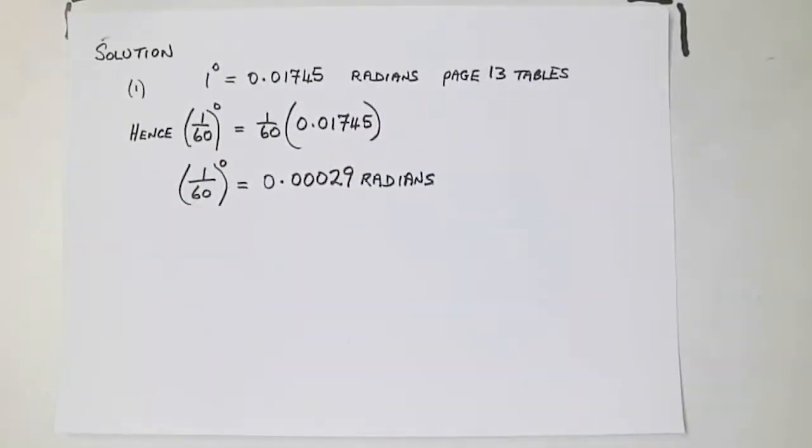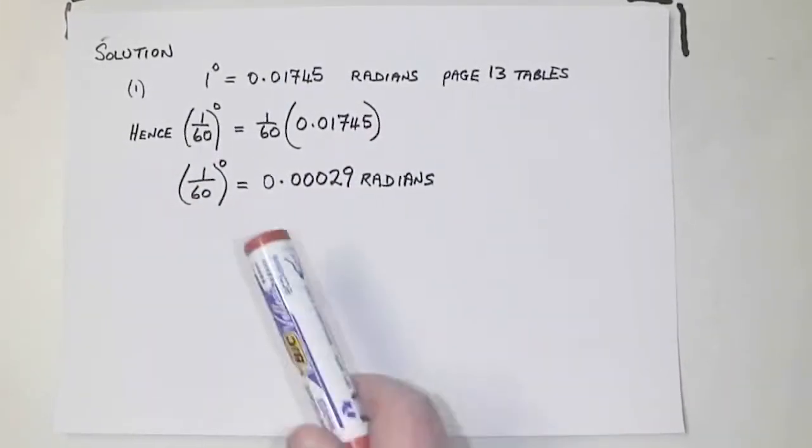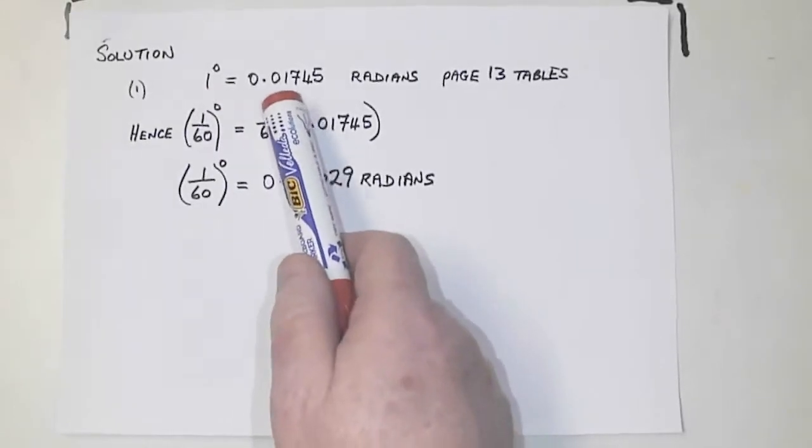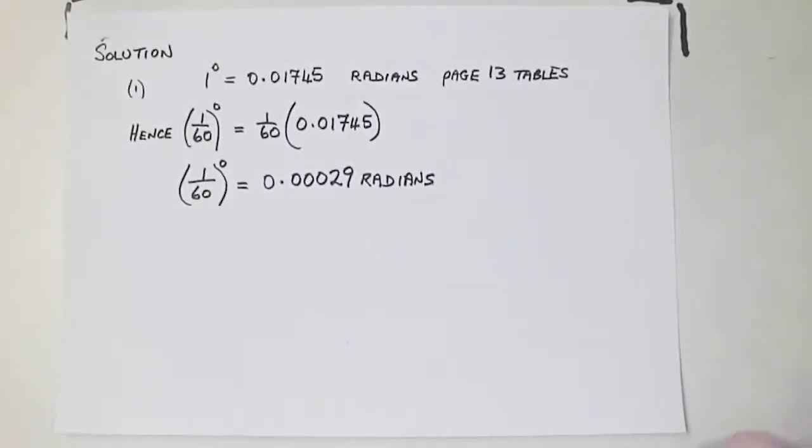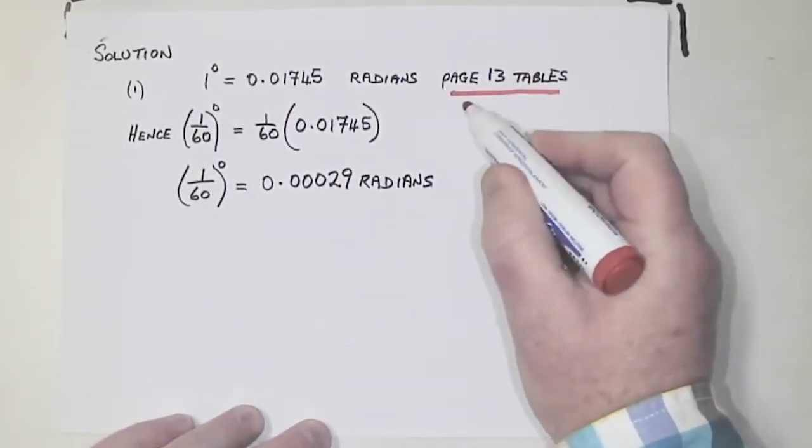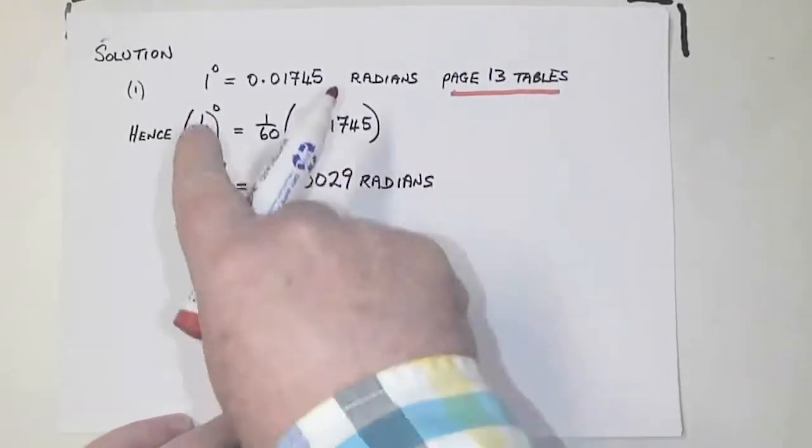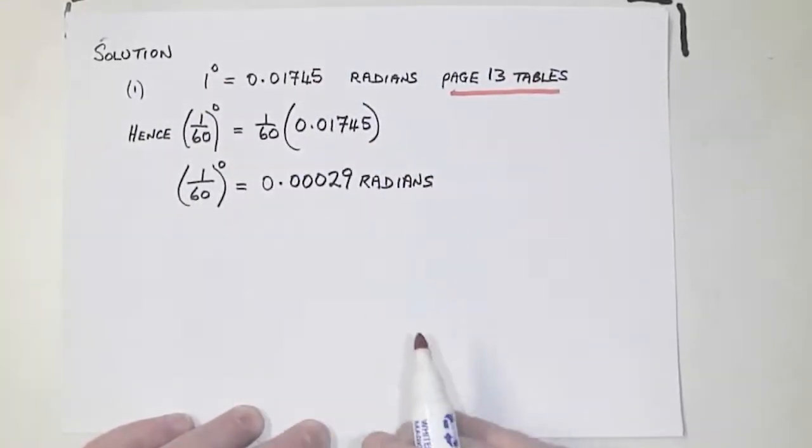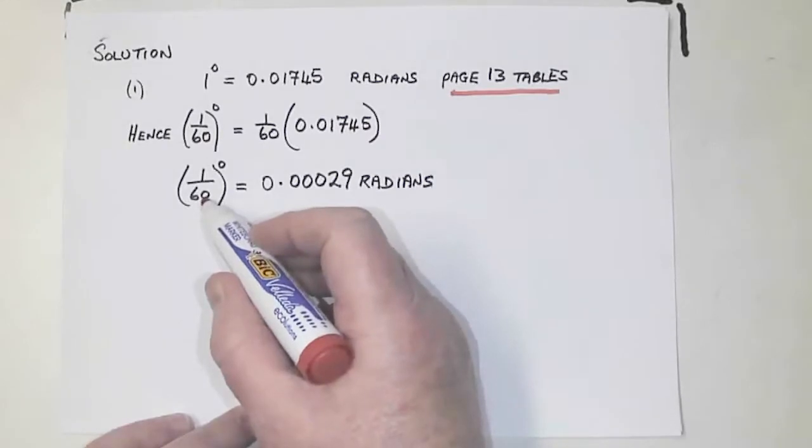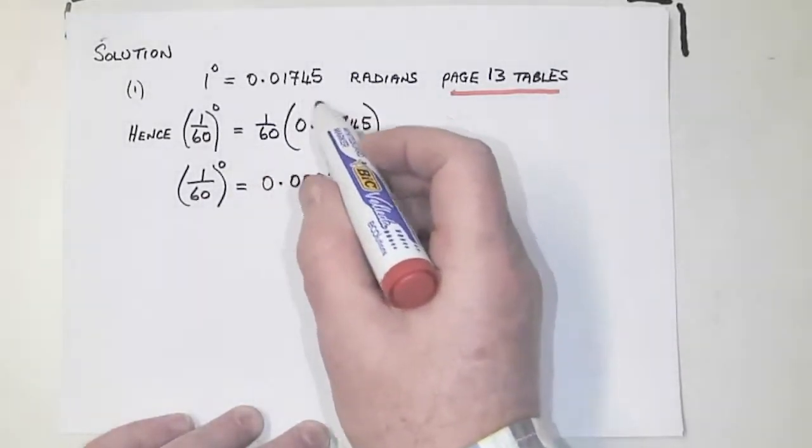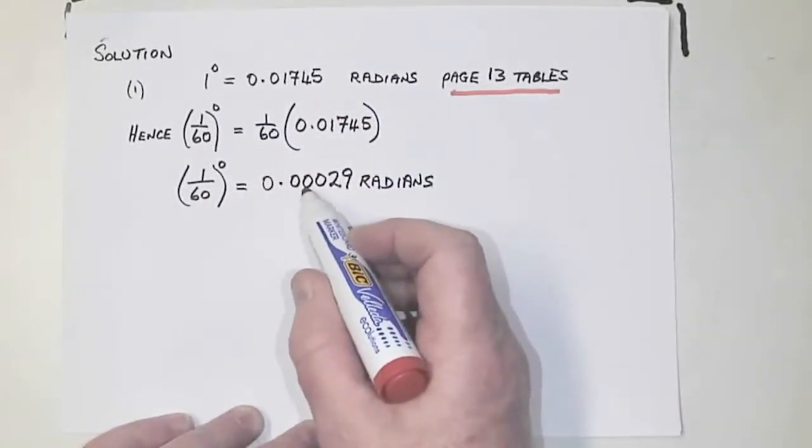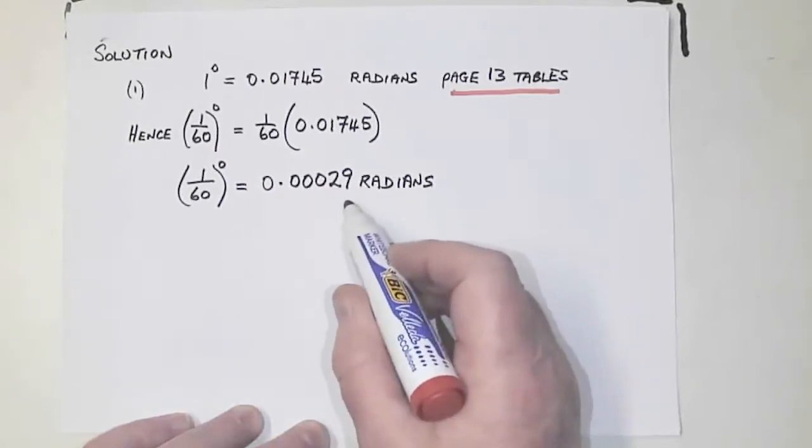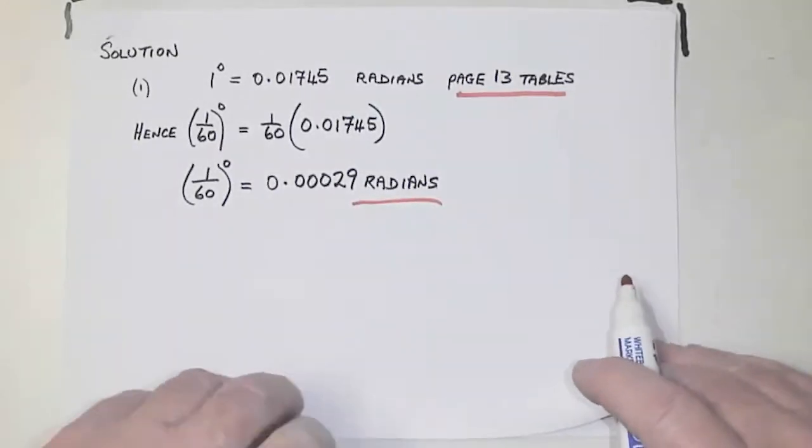So, first part is, can I change 1 degree to radians? 1 degree is 0.01745 radians, and that's in the tables, the booklet of formulas and tables on page 13. Hence, 1 over 60, multiply both sides by 1 over 60, you get 1 over 60 is equal to 1 over 60 times that number. So you get 0.00029 radians. And that's going to be useful in the next part.